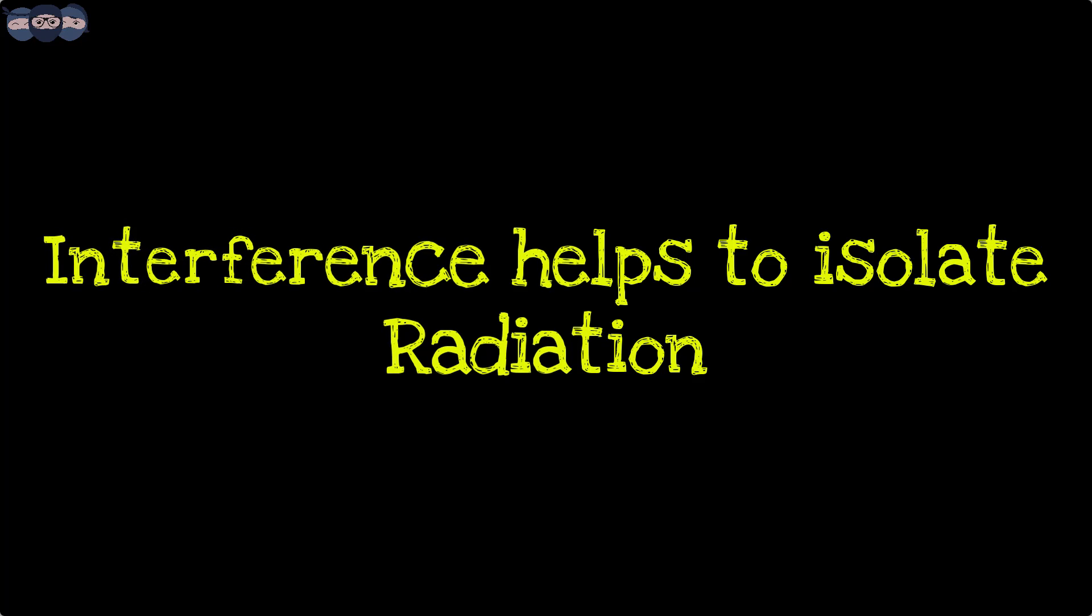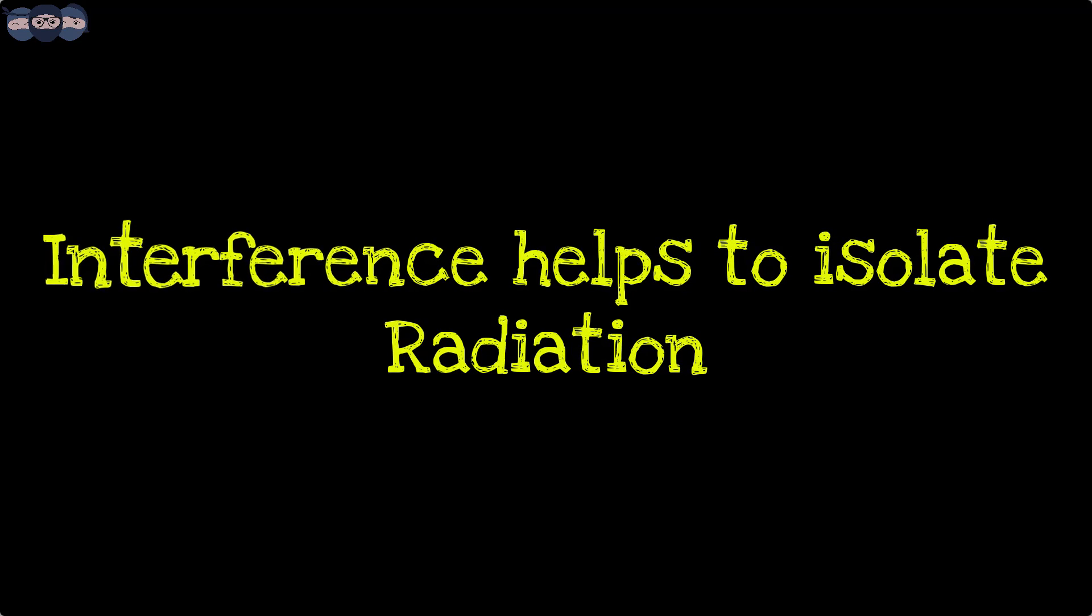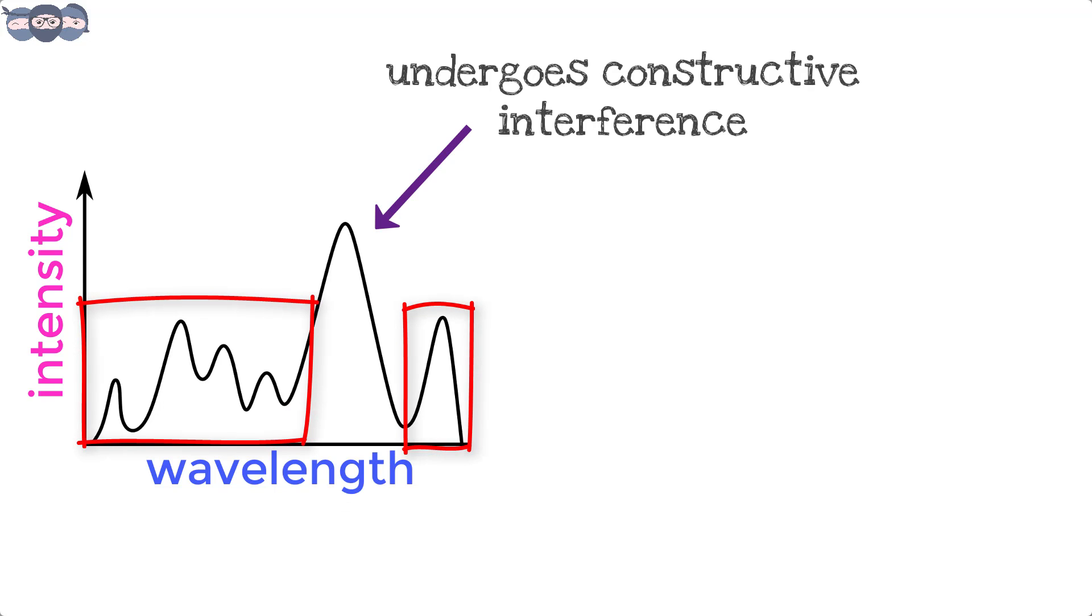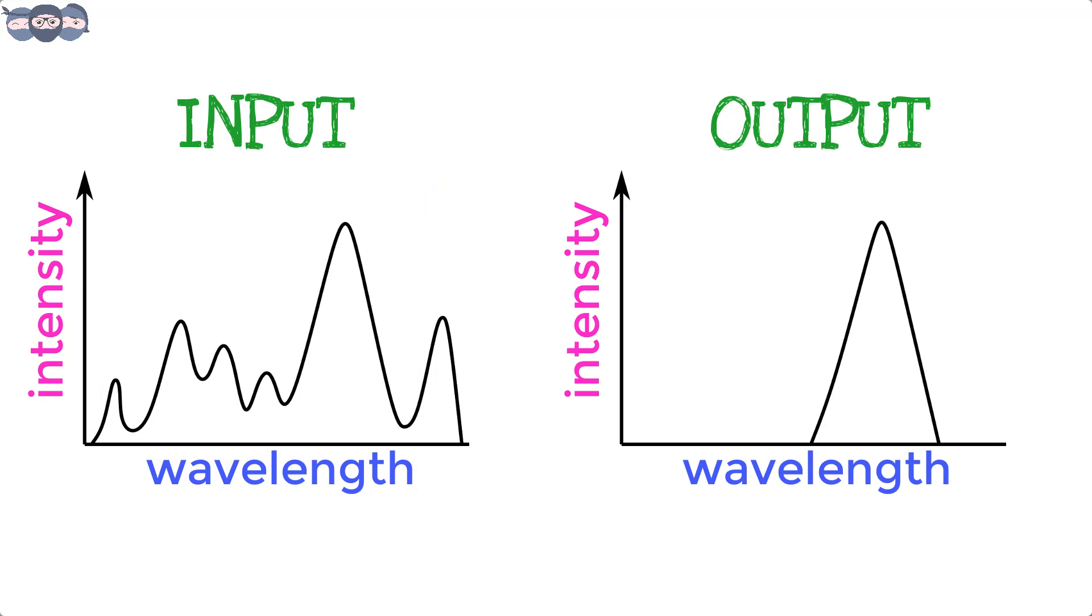Using this phenomenon of interference, we can obtain light of the desired wavelength. The wavelength required undergoes constructive interference while the radiations of other wavelengths are cancelled out by destructive interference.